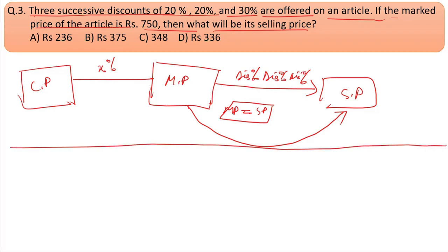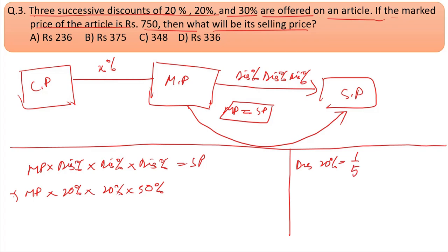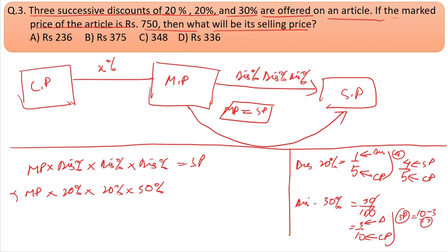The marked price is given, and discount percentages are 20%, 20%, and 30%. The first discount is 20%, which is 1/5. After 20% discount, the selling price is 4/5 of cost price. The second discount is also 20%, so again multiply by 4/5.